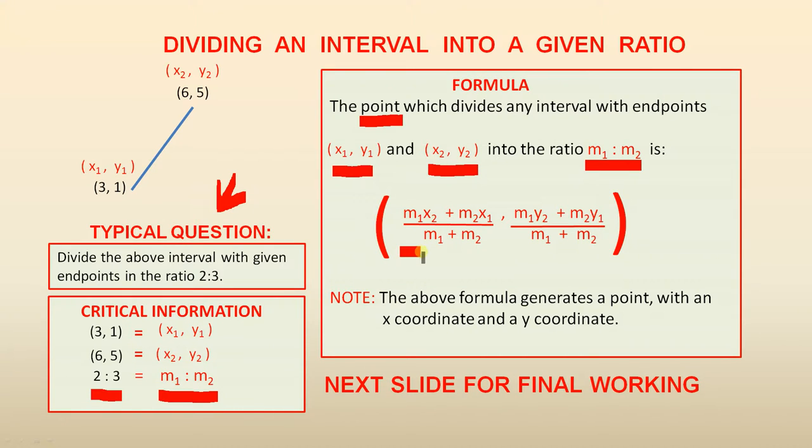Now this is the x value of the point. The x value is (m1·x2 + m2·x1) / (m1 + m2). That's the x coordinate. The y coordinate is (m1·y2 + m2·y1) / (m1 + m2).